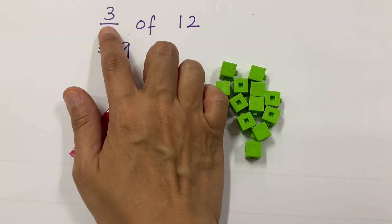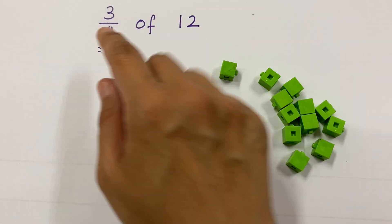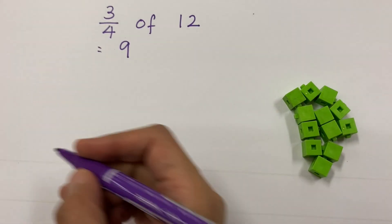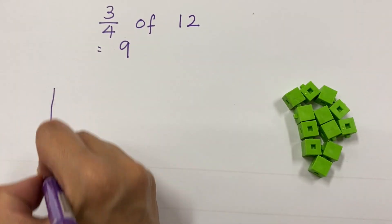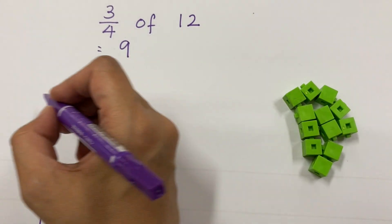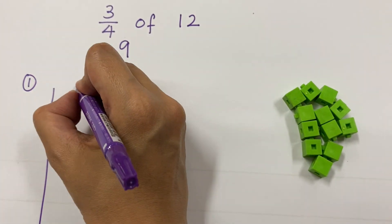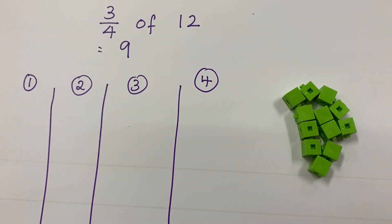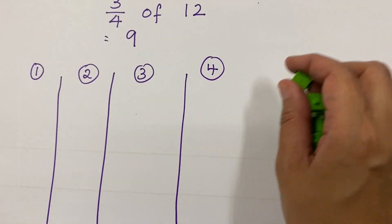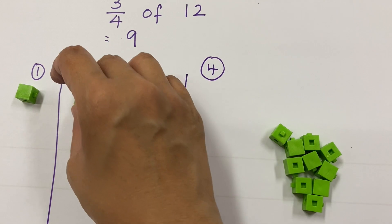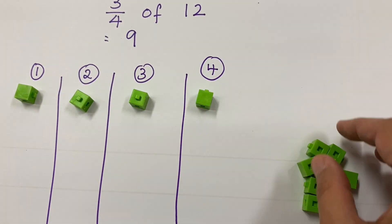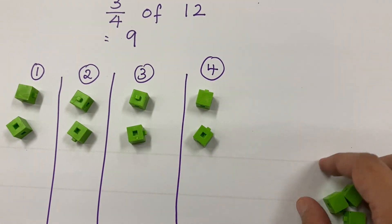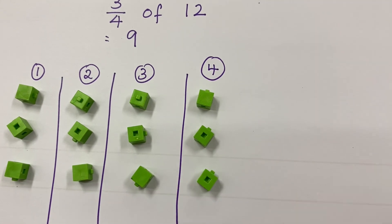The denominator tells you the grouping. So all you need to do is draw four columns — one, two, three, and four columns. You have four columns, and then you put each cube into the four quadrants until you are done with all the cubes.